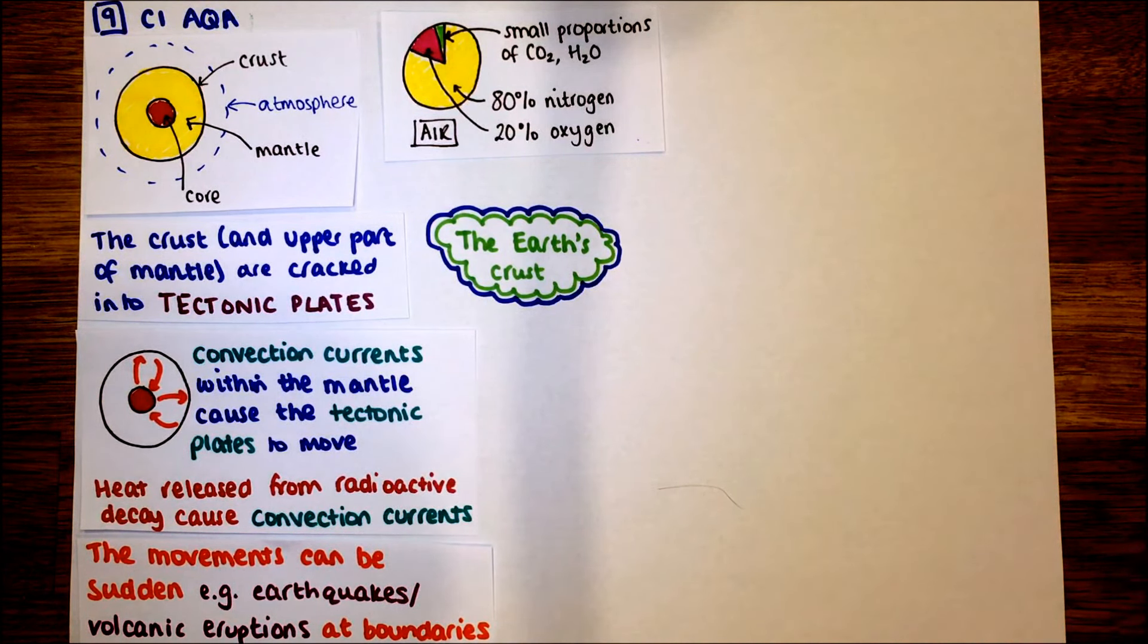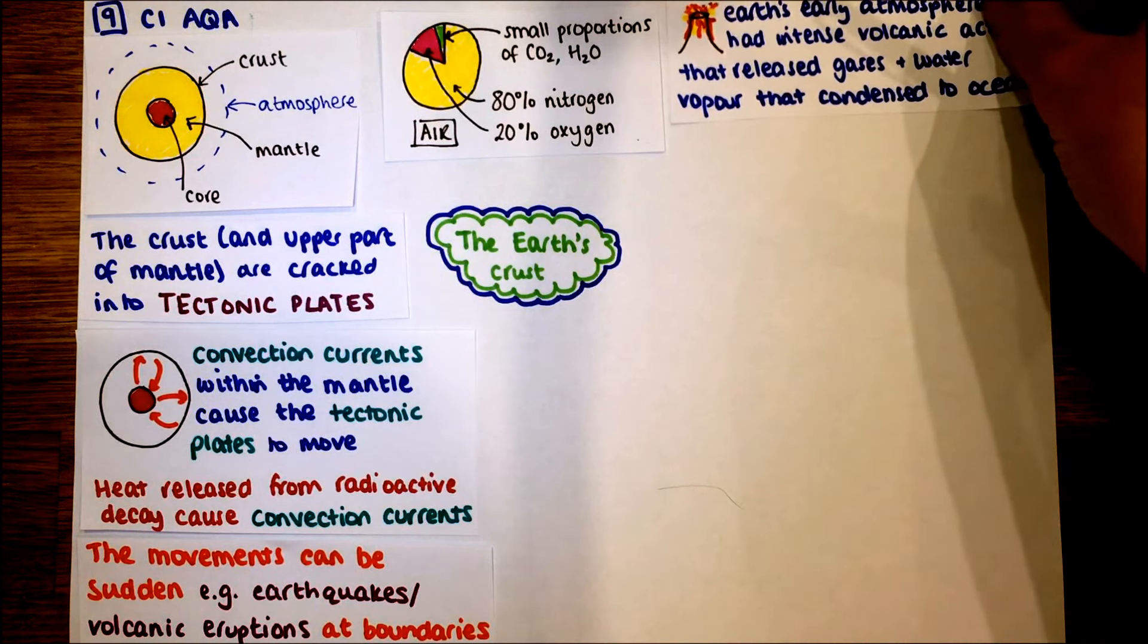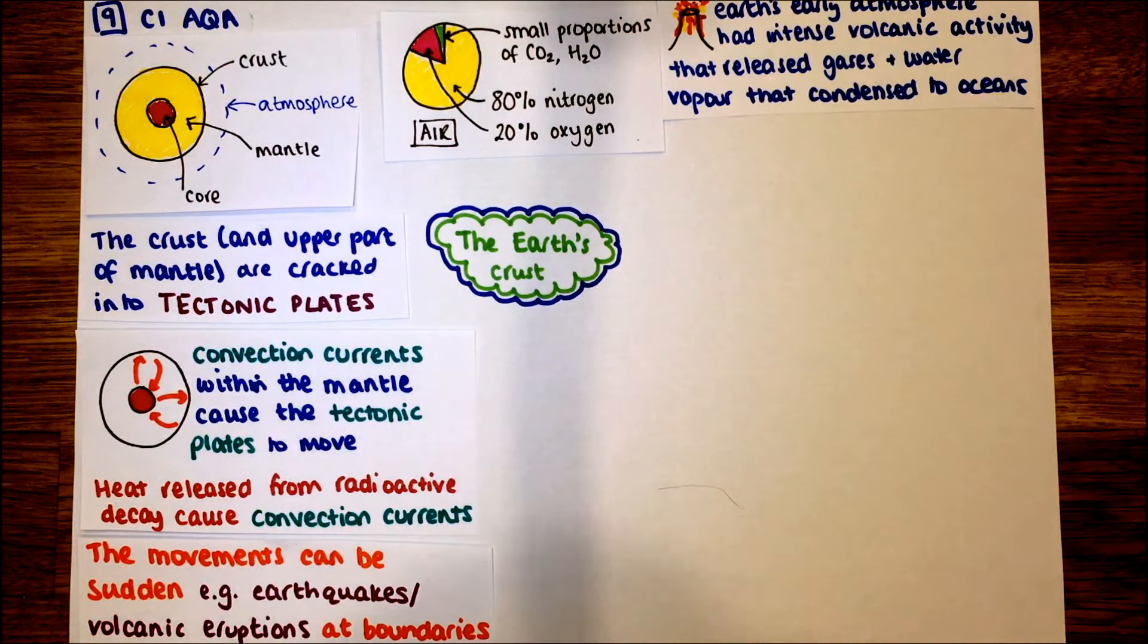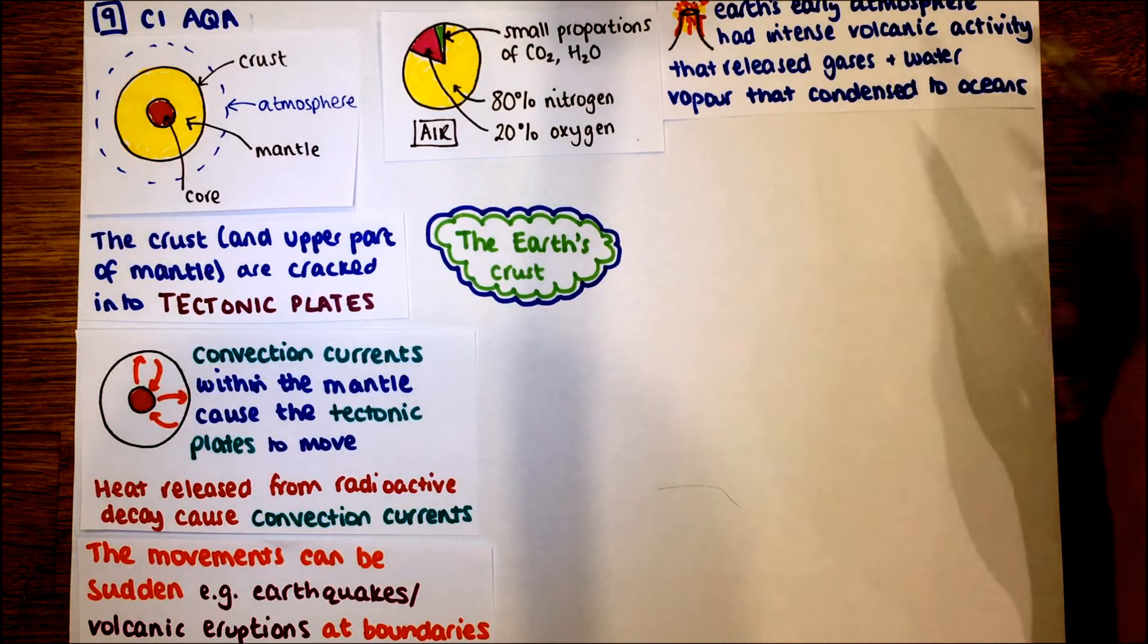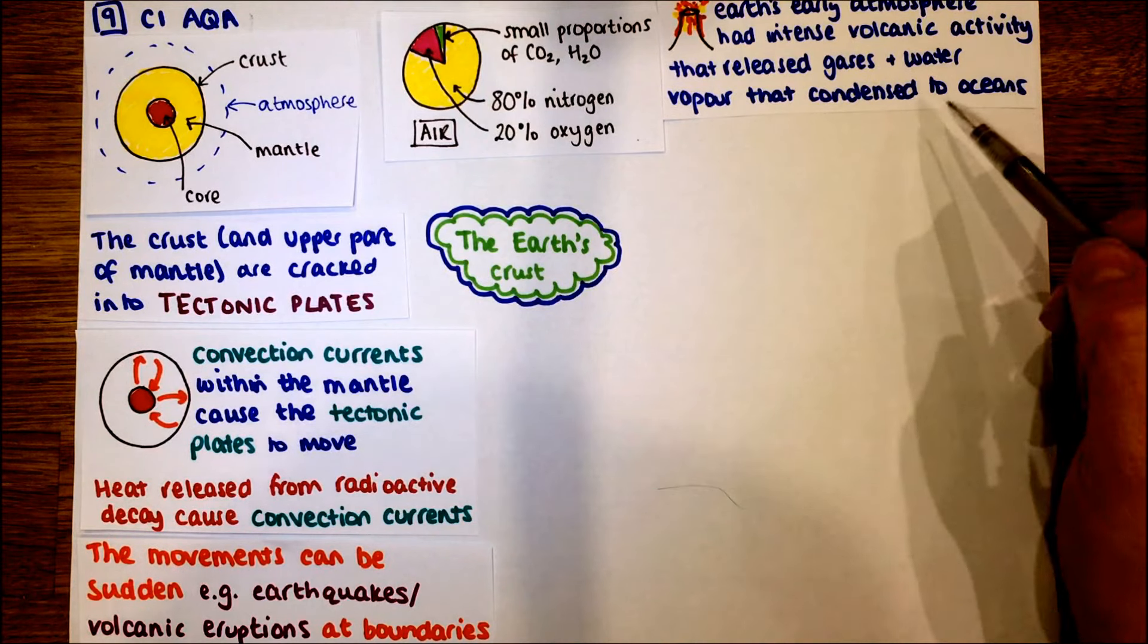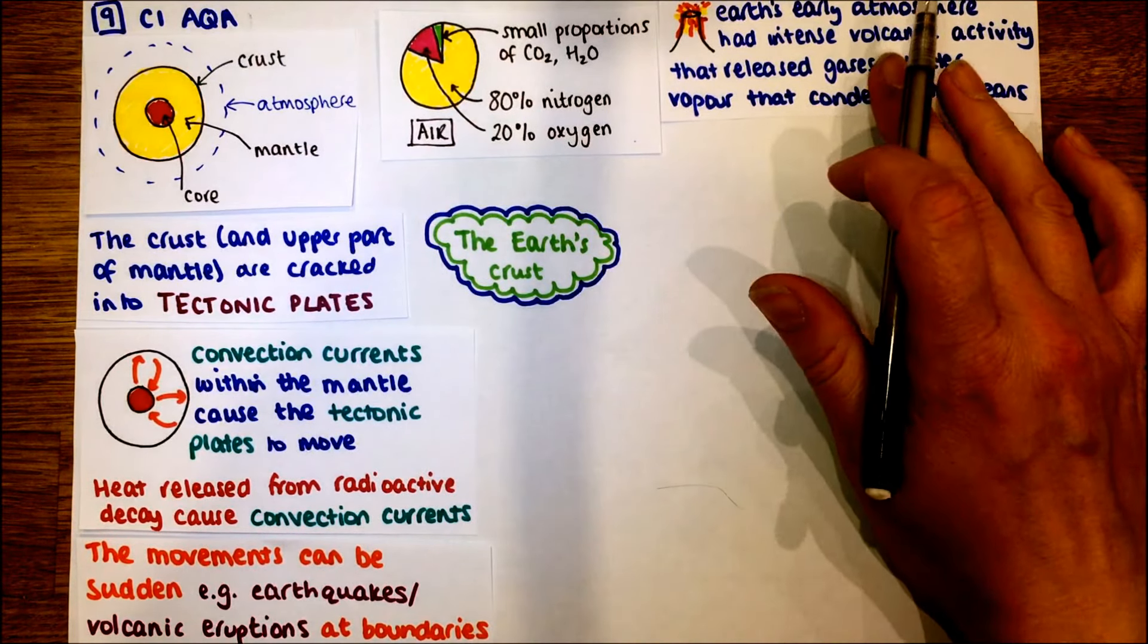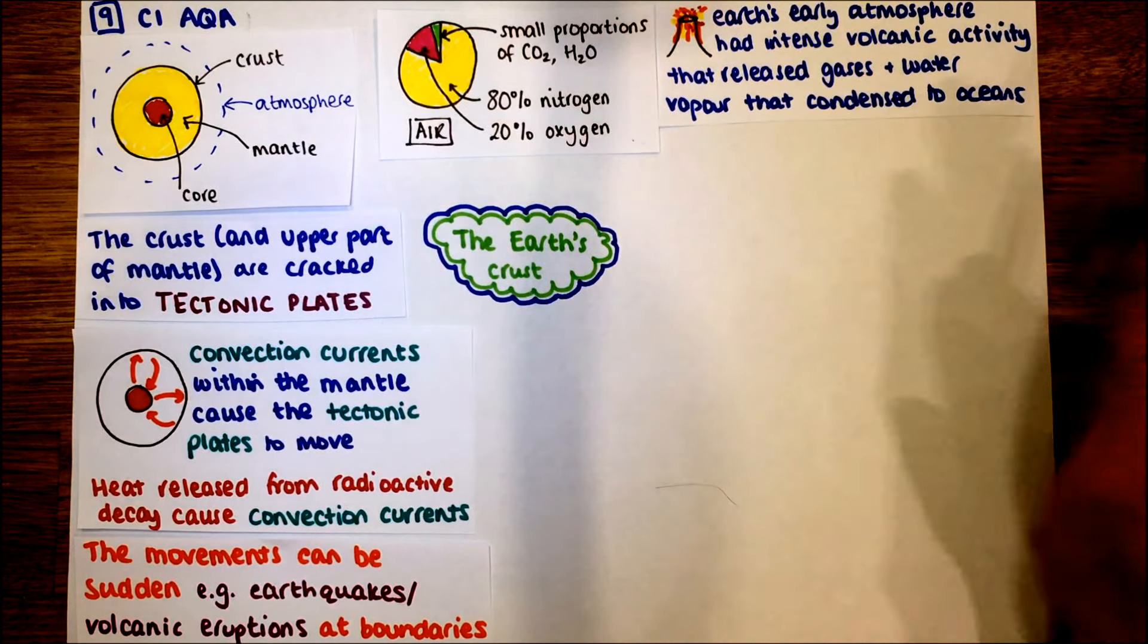If we look back right to the beginning of the earth and what the atmosphere we think was like, there were many theories surrounding the earth's atmosphere and about how the atmosphere formed, but also how life then started to form. The earth's early atmosphere, we think would have had intense volcanic activity that released gases and water vapour into the atmosphere. Then over time, as the earth started to cool, that water started to fall as rain and form our oceans.